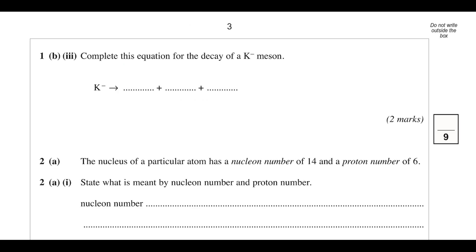So we've got an equation for the decay of the k-minus meson. From the Feynman diagram, we saw that a strange quark changes into an up quark. So it's gone from being anti-up strange to being anti-up up. We also have an electron, and then an anti-electron neutrino to conserve electron lepton number.